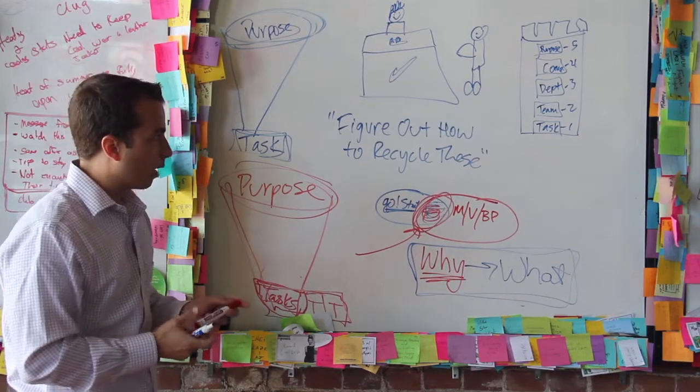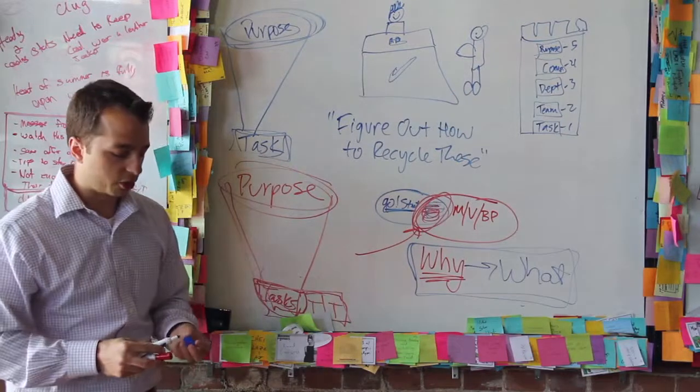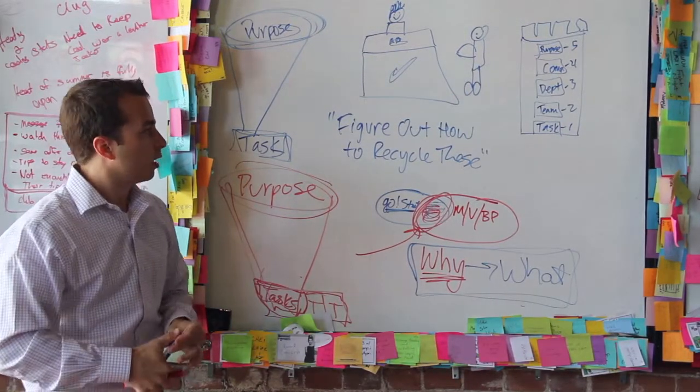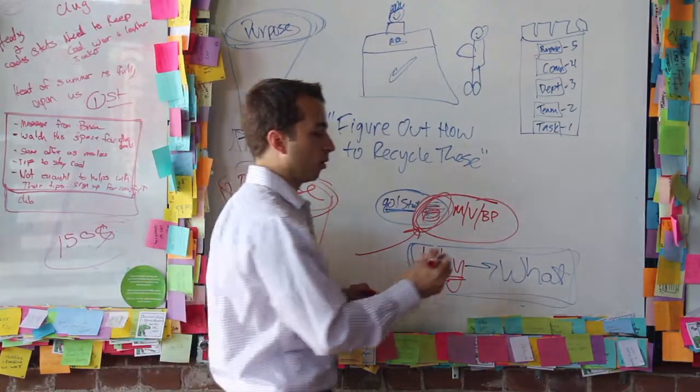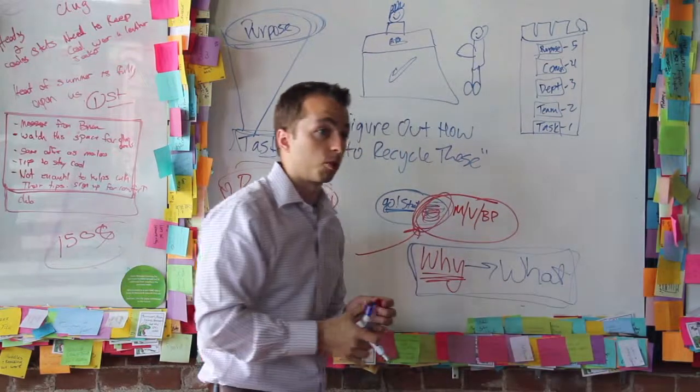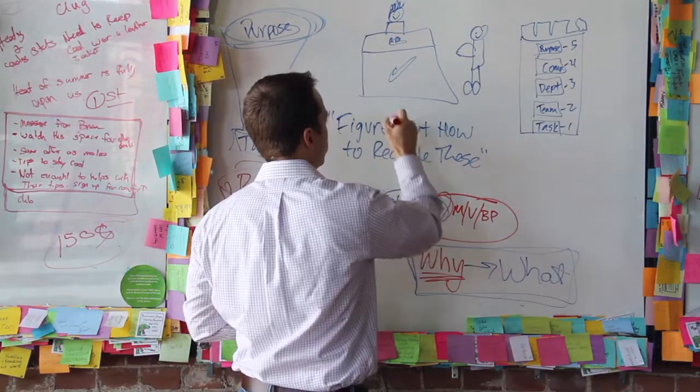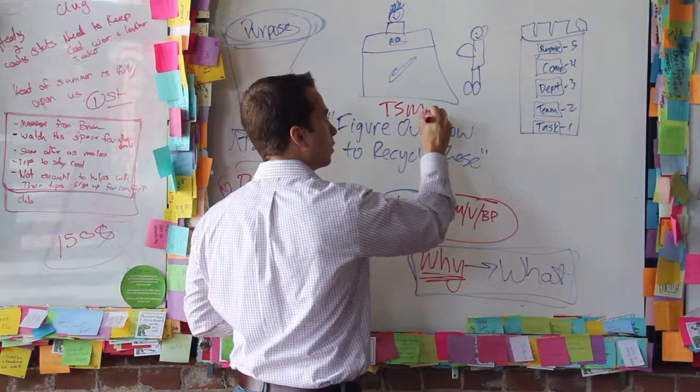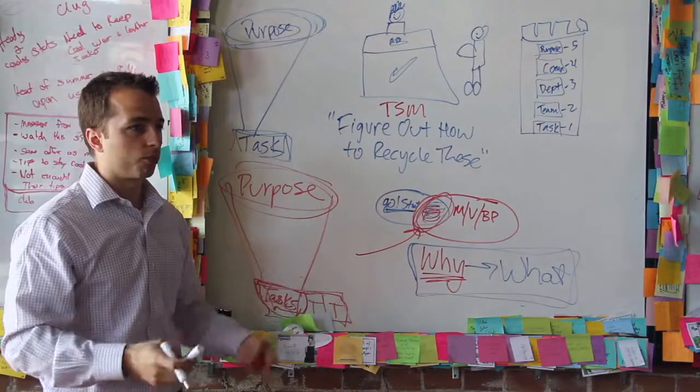So Clint now often uses this story within his company because this really translates across lots of different things. So what oftentimes he'll say is like if he's in a meeting and maybe the perspective is a little bit too low when you're working on either a project or working on client work, he'll say, what's the tennis shoe moment? What is this really about? What's the real purpose of what we're doing?